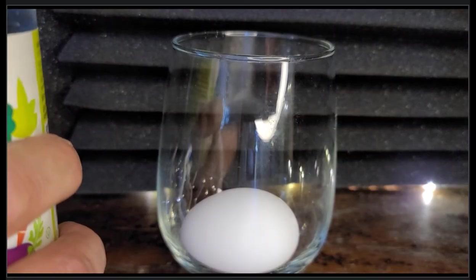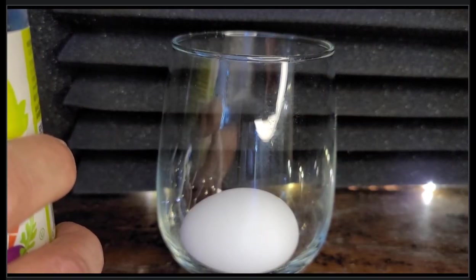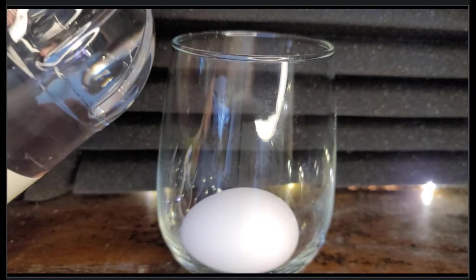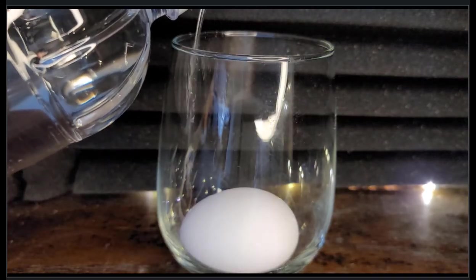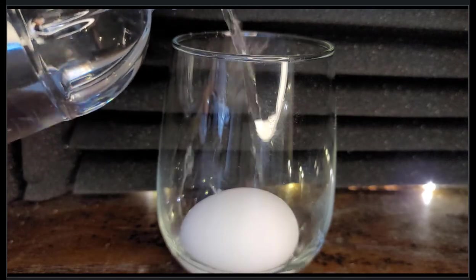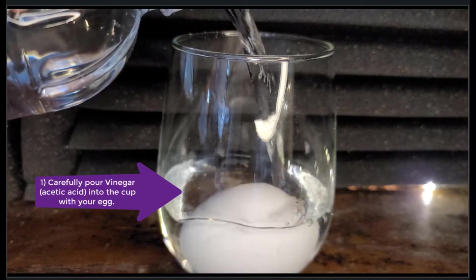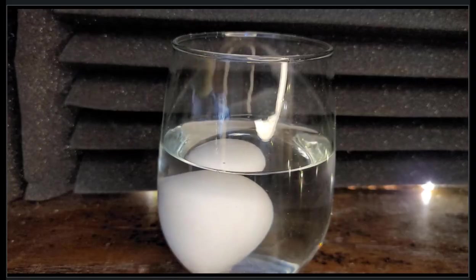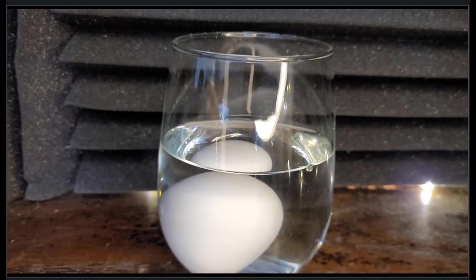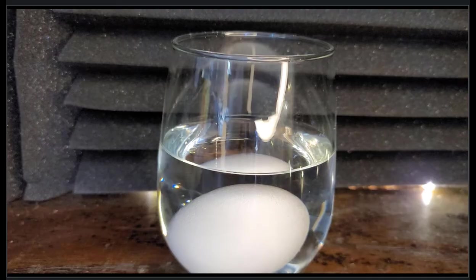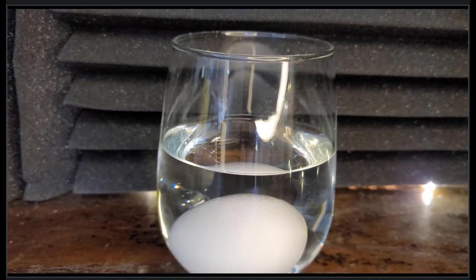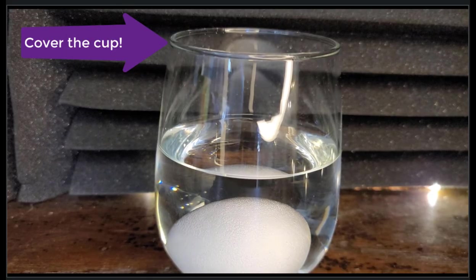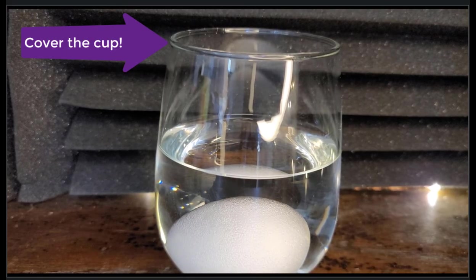The first time I did this, I ended up cracking my egg and it kind of messes up the experiment. So carefully put your egg into the bottom of the cup. And next, I'm going to pour vinegar, acetic acid, into my cup. And then you're going to want to cover the egg and the cup with either aluminum foil or saran wrap. This is the longest part of the experiment and it takes about one and a half to two days.